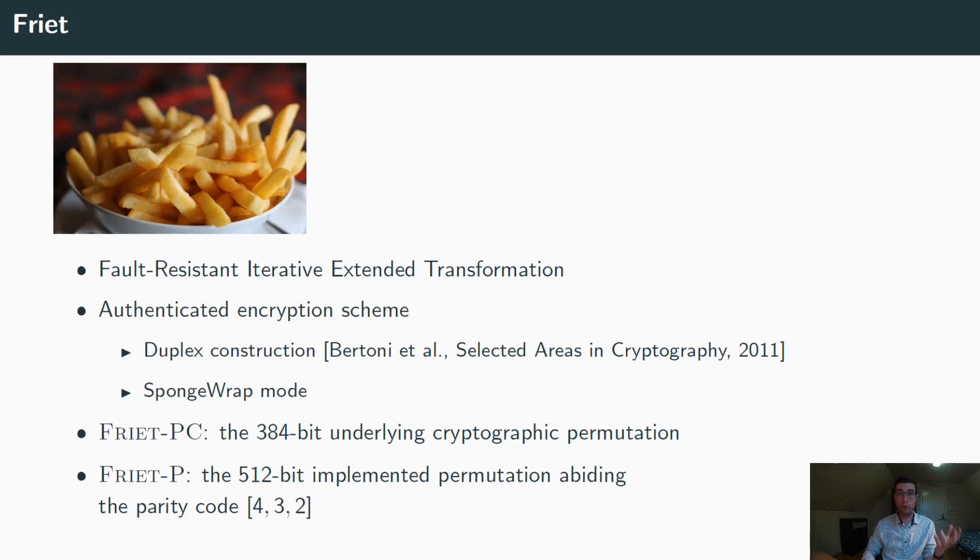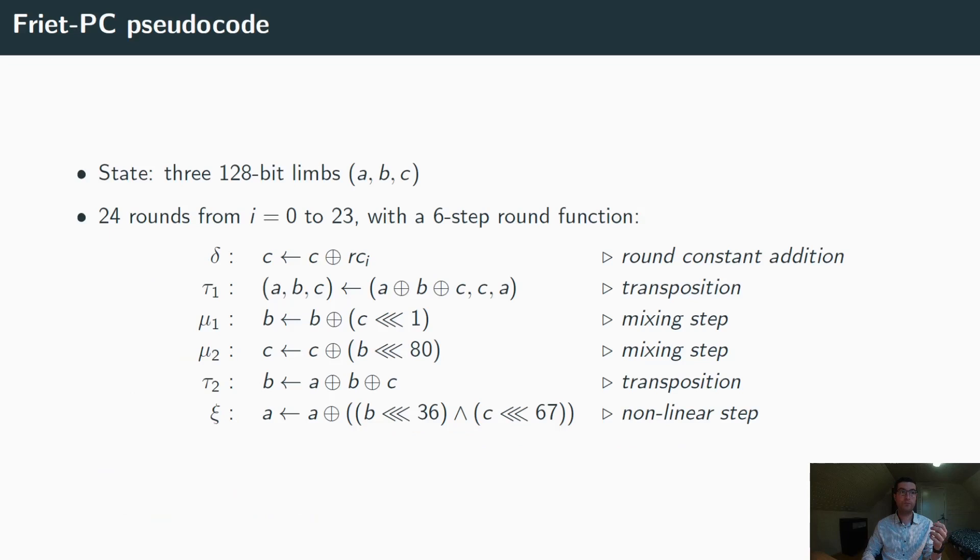Jokes aside though, FRIT is an authenticated encryption scheme based on the duplex construction in sponge wrap mode. Its underlying cryptographic permutation is called FRIT PC and has a state of 384 bits. This is the permutation that we study when we want to know more about the cryptographic properties of the scheme. But the actual permutation that we implemented is rather its code-abiding variant, FRIT P.